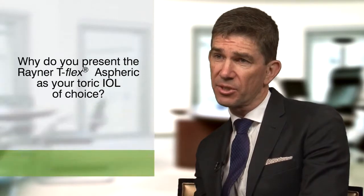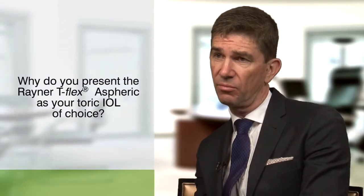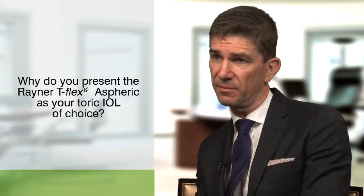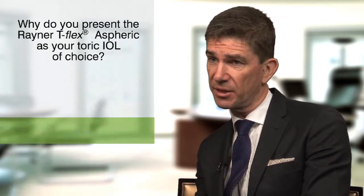The Rayner toric lens appeals to me particularly because it comes in half diopter steps for both sphere correction and cylinder correction. Patients presenting for cataract surgery may have primary astigmatism or secondary astigmatism — they may have had previous corneal transplant surgery, some degree of corneal ectasia, or corneal scarring. These patients will have unusual corneas and may not have the normal degree of spherical aberration we would expect.